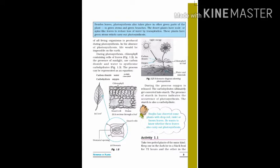During the process, oxygen is released. The carbohydrates ultimately get converted into starch. The presence of starch in leaves indicates the occurrence of photosynthesis. The starch is also a carbohydrate.